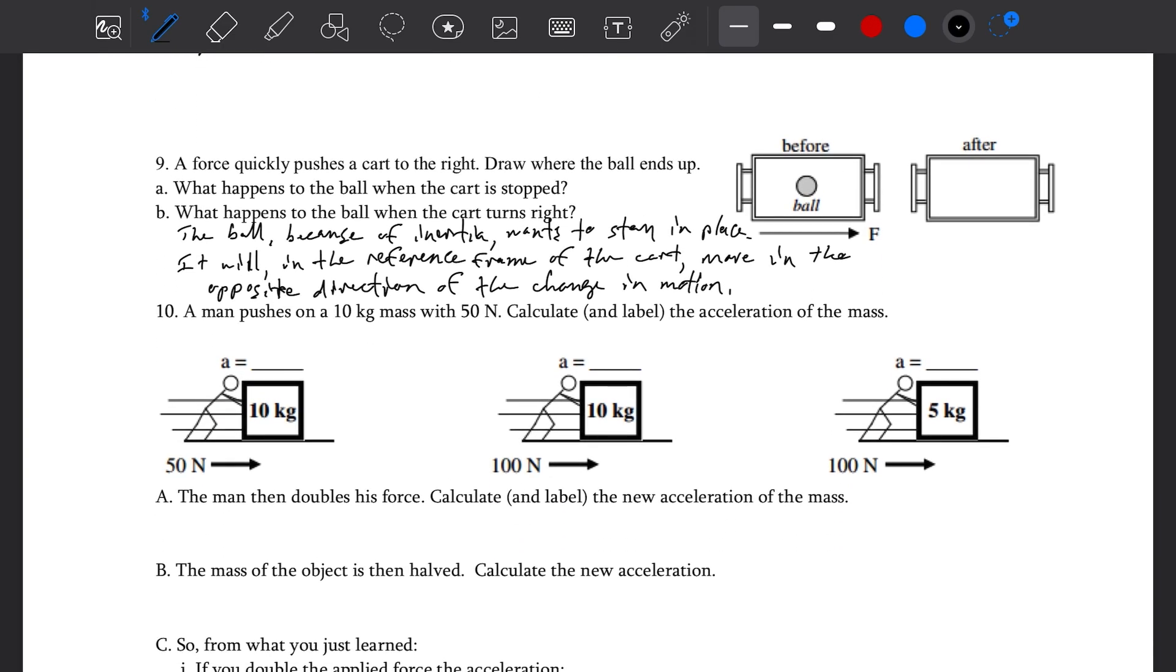A man pushes a 10 kilogram mass with 50 newtons. So we're going to calculate and label the acceleration of the mass. We know net force is mass times acceleration. So acceleration is force divided by mass. So the first one, the force is 50, the mass is 10. 50 divided by 10 would be 5. 100 divided by 10 would be 10. 100 divided by 5 would be 20.